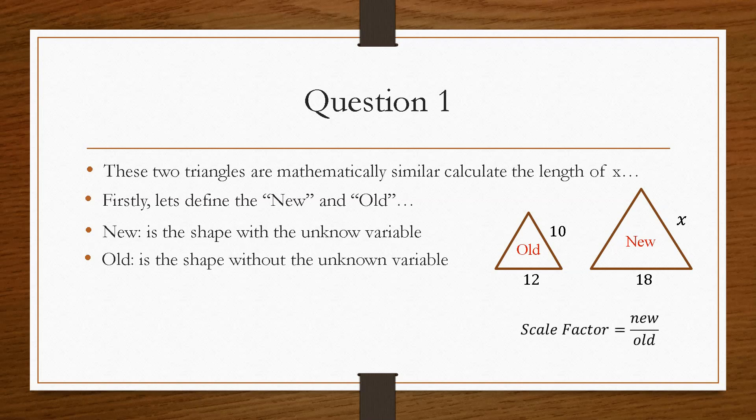So once we label these, our scale factor formula becomes new over old. So this applies to any side, any area, or any volume. So our scale factor becomes 18 divided by 12, because this bottom section here, and this bottom section here, we have information about these. So we can compare these and work out the ratio that the new triangle is bigger than the old one.